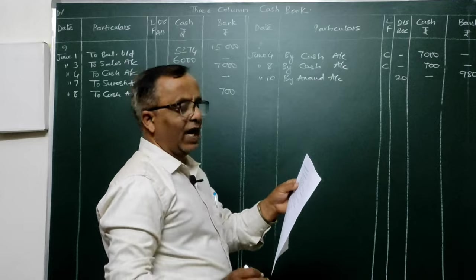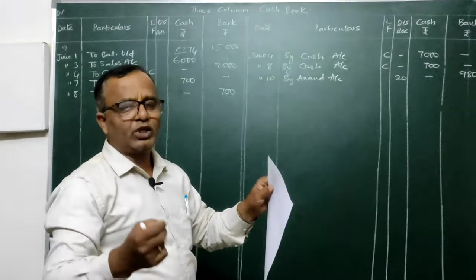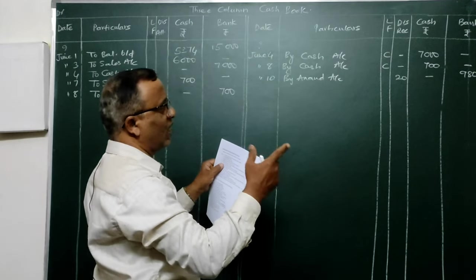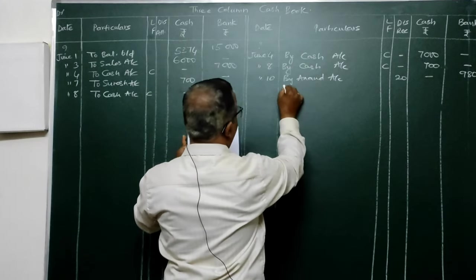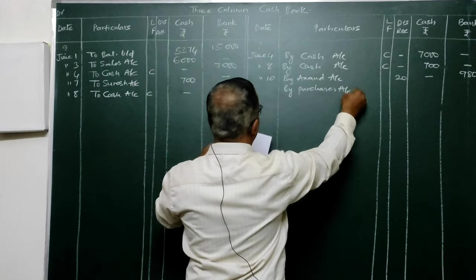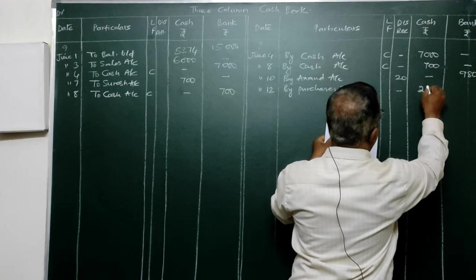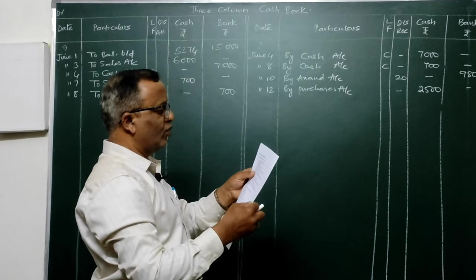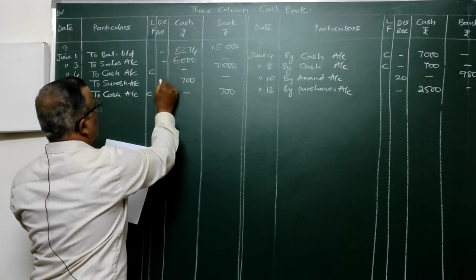On the 12th: cash purchases. Entry is Purchase Account Dr. To Cash Account. Post 'By Purchases Account' on the credit side in the cash column — 2,500. Then on the 13th: withdrew from bank for office use. Cash is withdrawn from bank — entry is Cash Account Dr. To Bank.